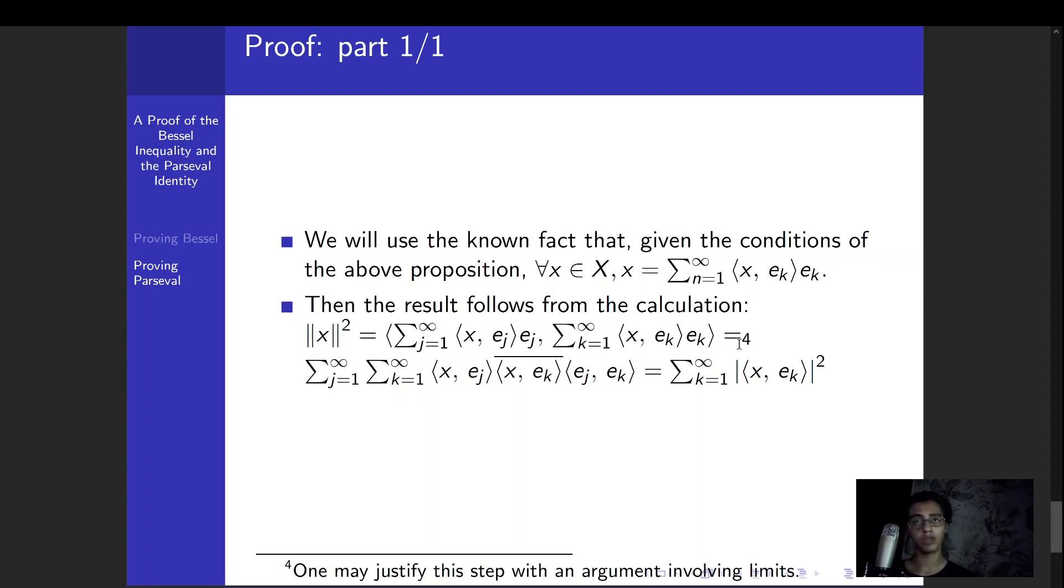Which would be a straightforward thing to do if our series that we were working with were finite. And I wrote in the footnote here that one may justify this step with an argument involving limits, and the argument involving limits is the following. You can say that the inner product is continuous, so you can remove the limits from the inside of the inner product, then work with these series as if they were a sum, and then in the end, just reapply those two limits that you removed from the inner product, and you finally get your result. And that concludes the proof.